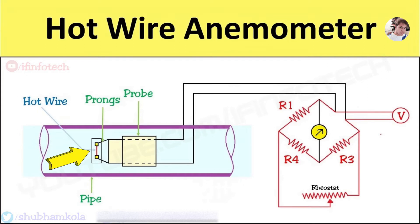It consists of a very fine heated metal wire supported on a probe which is exposed to fluid flow, whose velocity is to be measured.